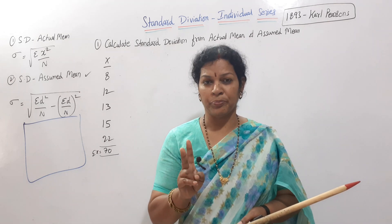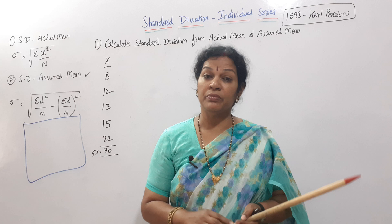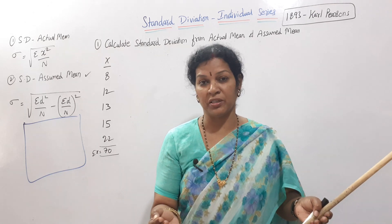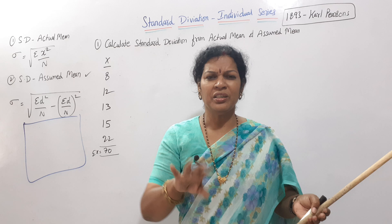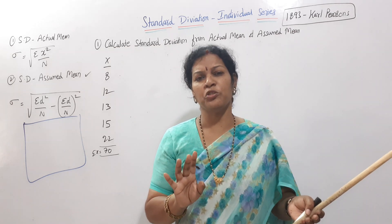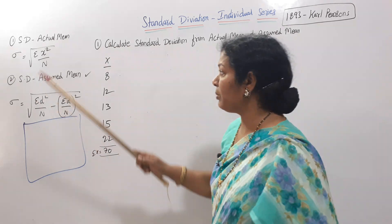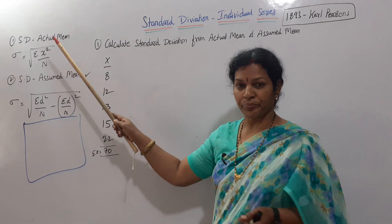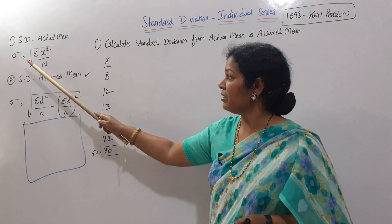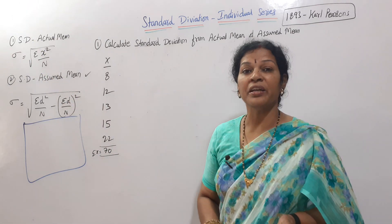We have two methods here. One is the actual mean method and the other is the assumed mean method. If we take the mean deviations using the actual mean, it is the actual mean method. If we assume a number, it is the assumed mean method. This is for the individual series. The symbol rho (row) represents standard deviation.